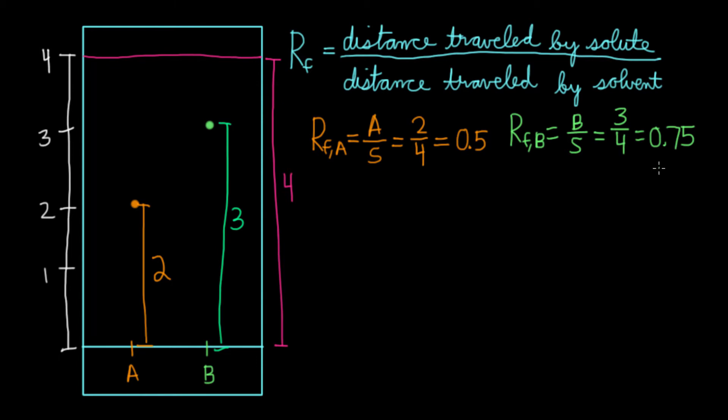So what can we tell about these two compounds? If we remember from talking about the mobile phase and stationary phase, compounds that travel really far must be more attracted to the mobile phase, and therefore are less polar. So we can say that compound B is less polar and travels faster. The opposite is true for compound A. Since this doesn't move as much, it's more attracted to the polar silica gel, and hence is more polar than compound B, and travels slower.